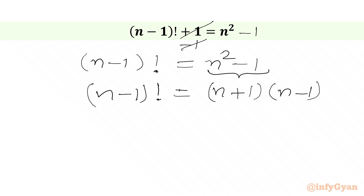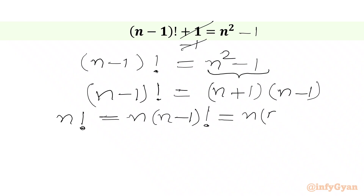Now we are going to use the recursive formula for factorials. We know that n factorial can be written as n times (n minus 1) factorial, or equal to n times (n minus 1) times (n minus 2) factorial, and so on. Now we are going to apply this recursive formula to our left hand side.